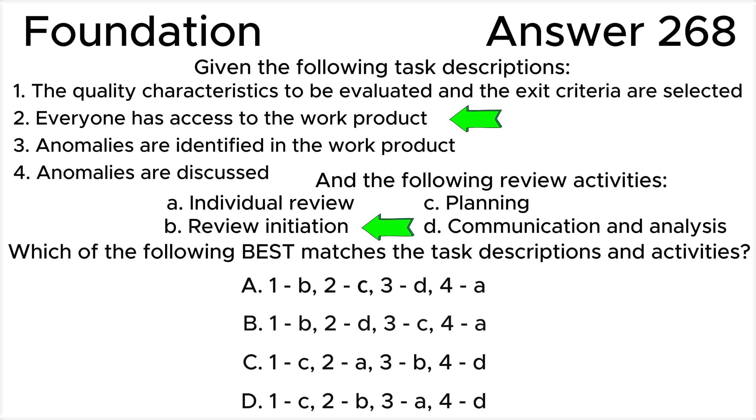Task 3: Anomalies are identified in the work product corresponds to the review activity A, Individual Review. During the individual review, each participant of the review evaluates the work product's quality, identifies and logs anomalies, recommendations, and questions using review techniques like checklist-based and scenario-based reviewing.